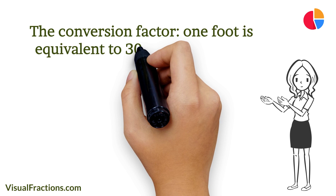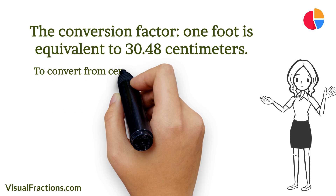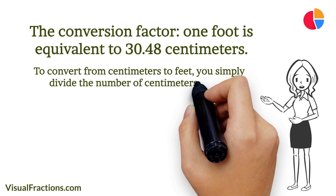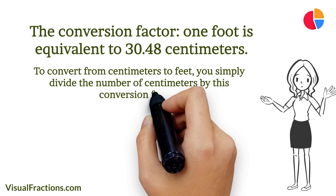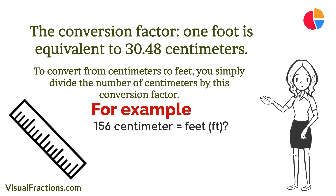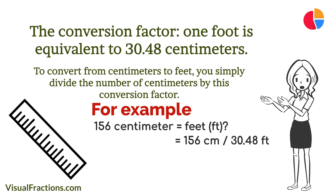One foot is equivalent to 30.48 centimeters. To convert from centimeters to feet, you simply divide the number of centimeters by this conversion factor. Now let's dive into an example — suppose we want to convert a length of 156 centimeters to feet. We begin by dividing 156 by the conversion factor of 30.48.